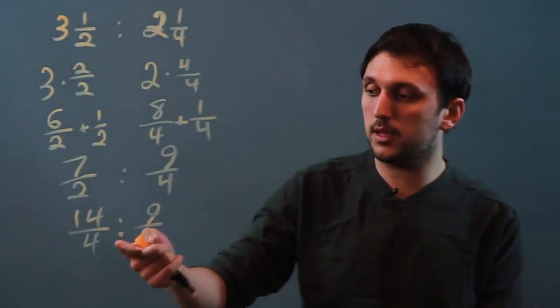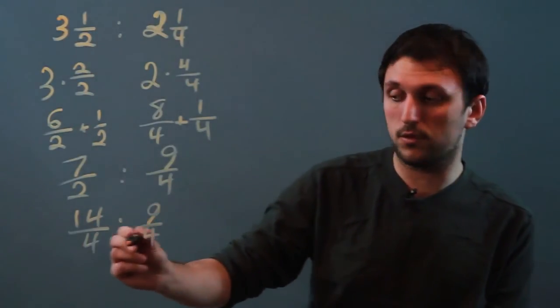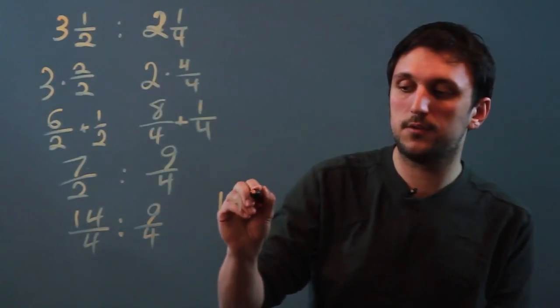Now this ratio looks a lot cleaner. 14 over four to nine over four which we can then simplify because the bases are the same to saying 14 to nine.